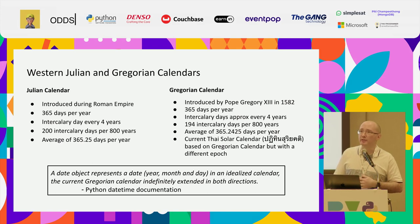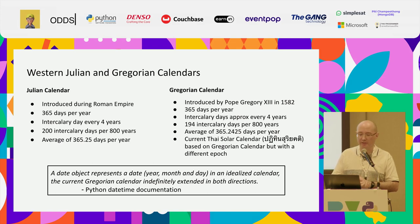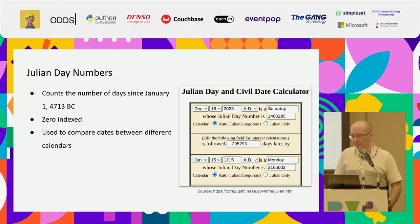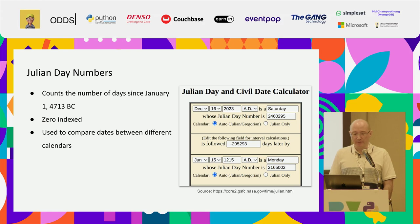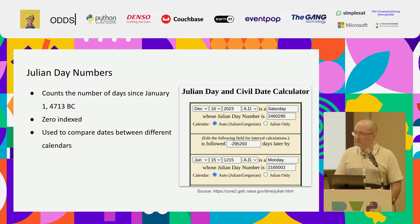The Python datetime module documentation shows it is based on the Gregorian calendar, extending it in both directions. To compare calendars, I'm using Julian day numbers — a reference point from 1st January 4713 BC, incrementing one per day, giving a linear progression to map other calendars against. NASA has a little calculator online where you can get these Julian day numbers and compare them to dates.